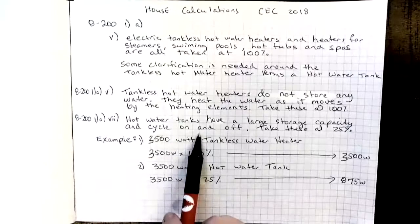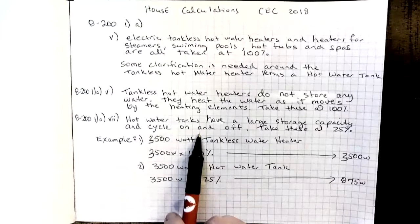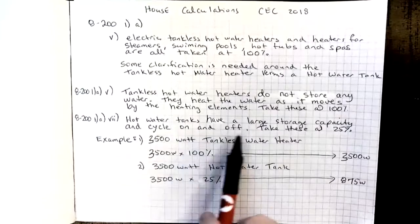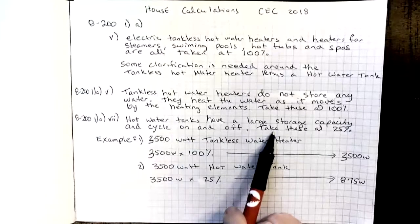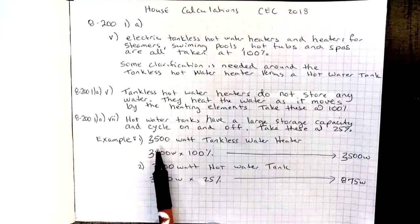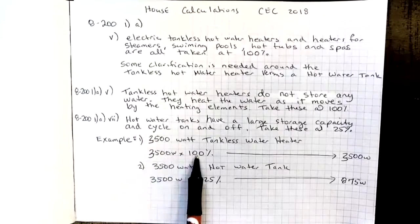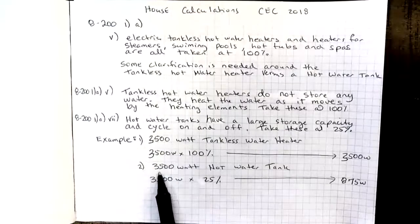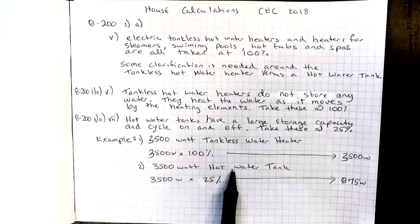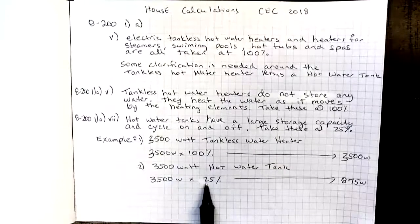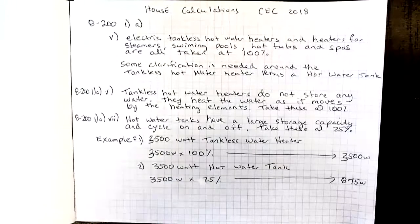The difference is that hot water tanks have a large storage capacity and they cycle on and off, so these are taken at 25%. For example, a tankless hot water heater rated at 3,500 watts is taken at 100%, versus a 3,500-watt hot water tank, which we would take at 25%.